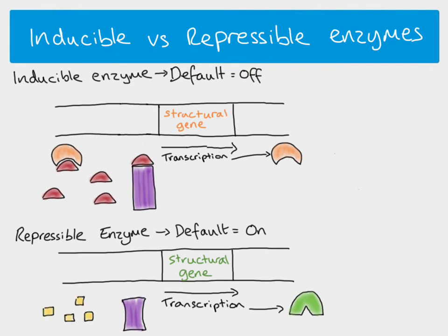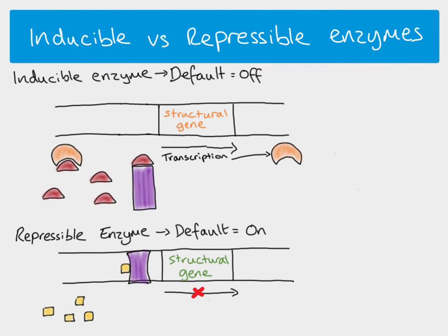If a small molecule — sometimes called an effector molecule — is present in the environment, it could be the product of the enzyme-controlled reaction. Importantly, this is not the substrate of the enzyme. When this molecule is present, it binds to the repressive protein, causing a change in the shape of the repressive protein, which then binds to the DNA. With the repressor now bound, transcription cannot take place and the enzyme is no longer produced.